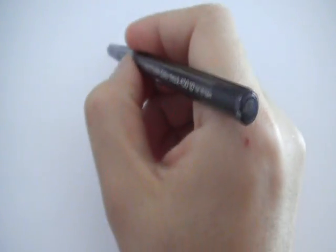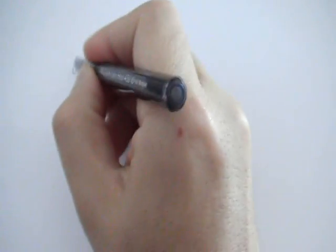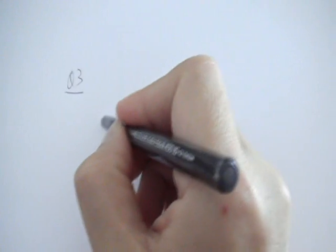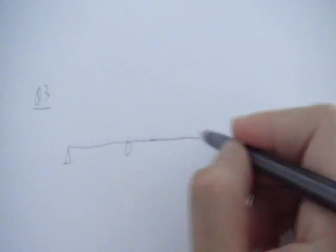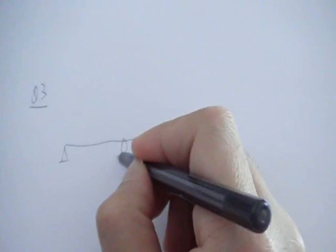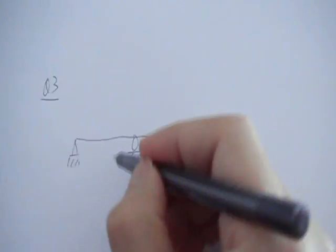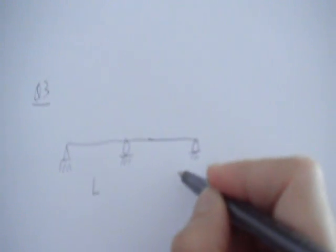Alright, so let's carry on with question number 3. Question number 3 is a 2-span beam with right supports, and that's L, that's L.